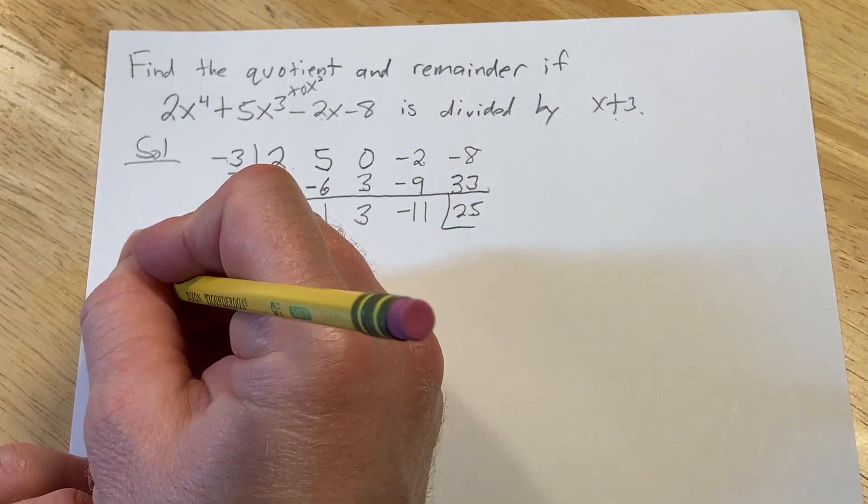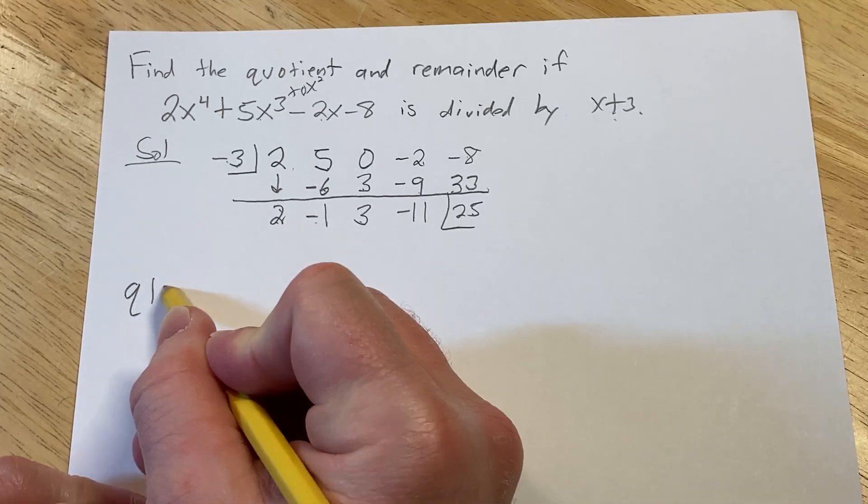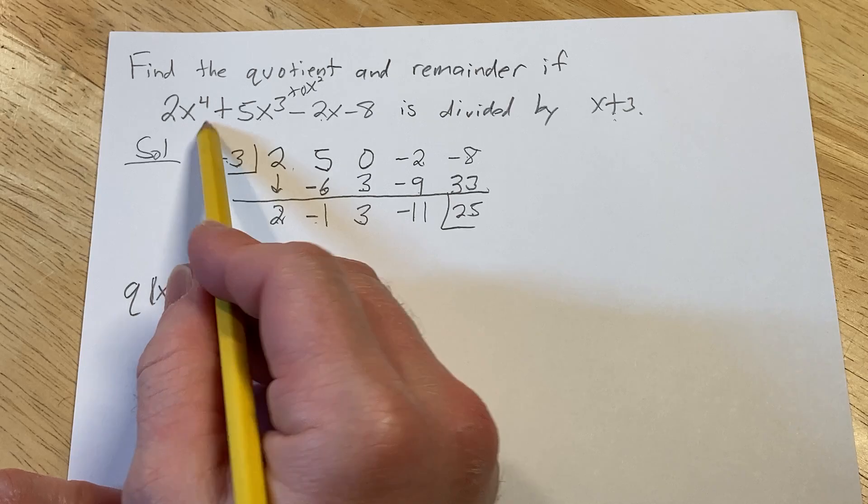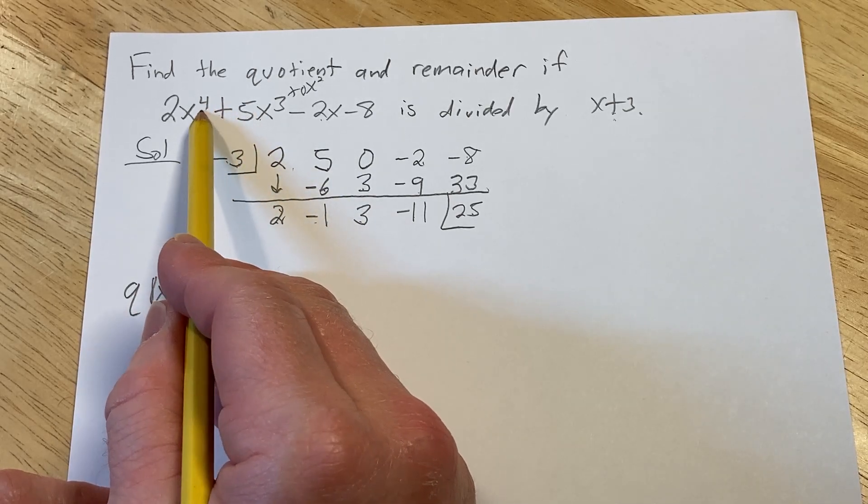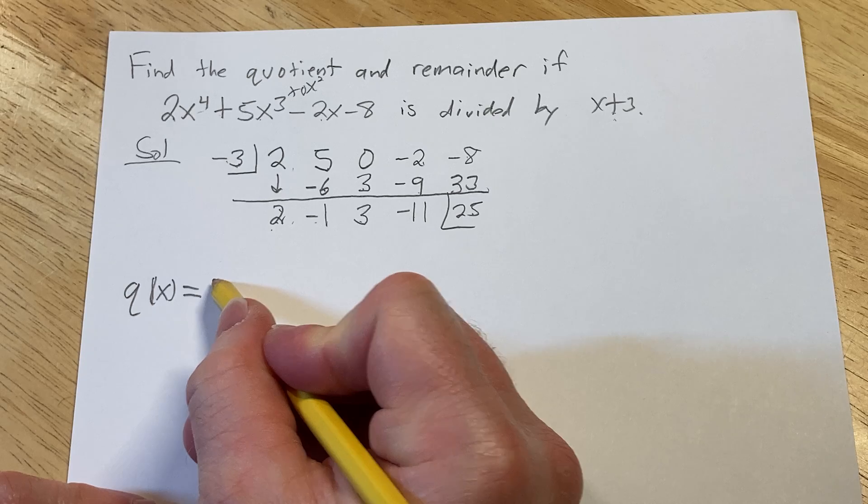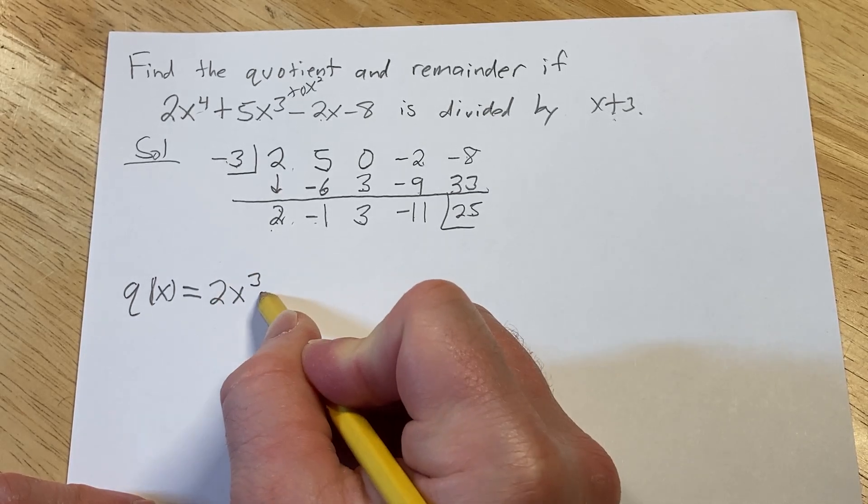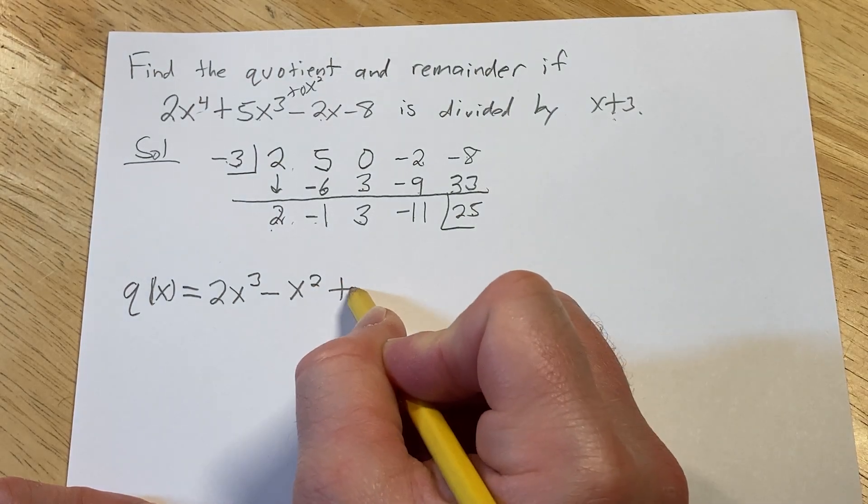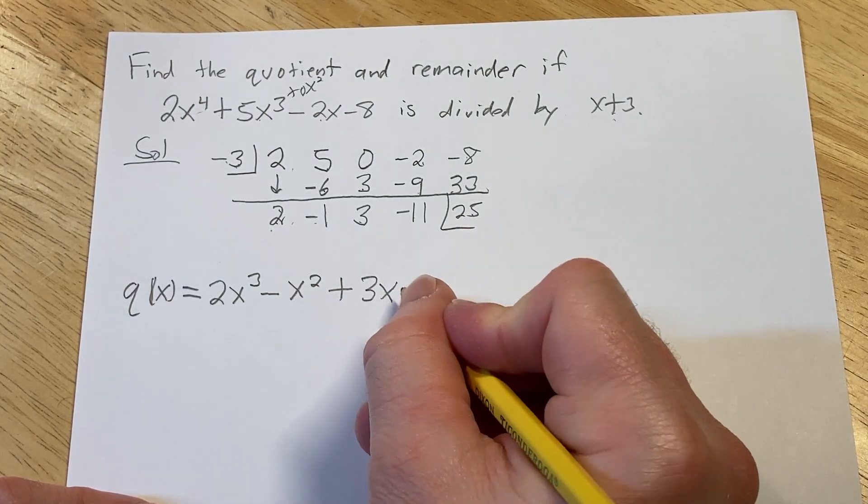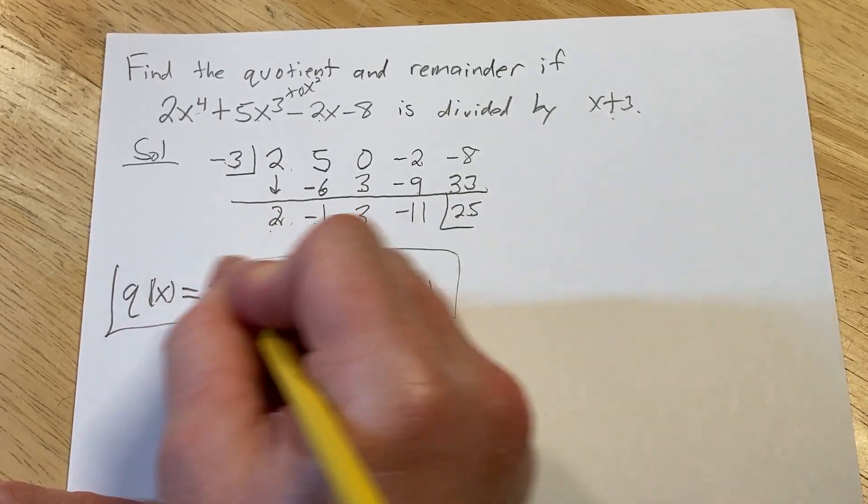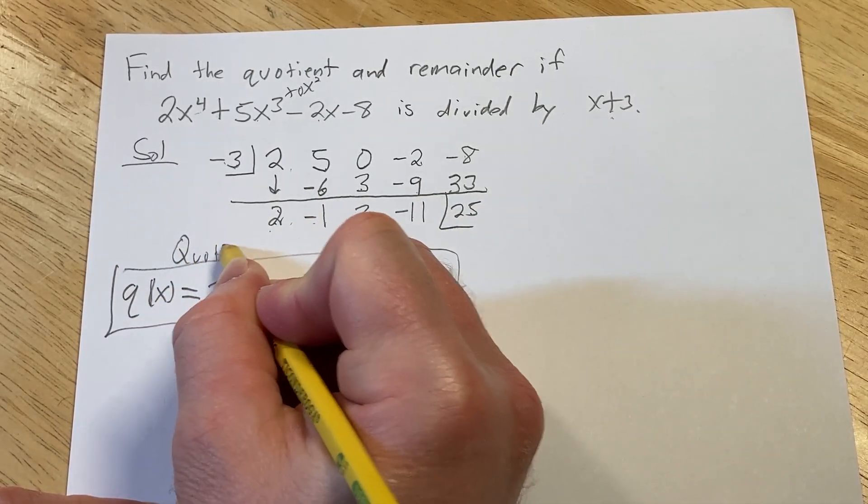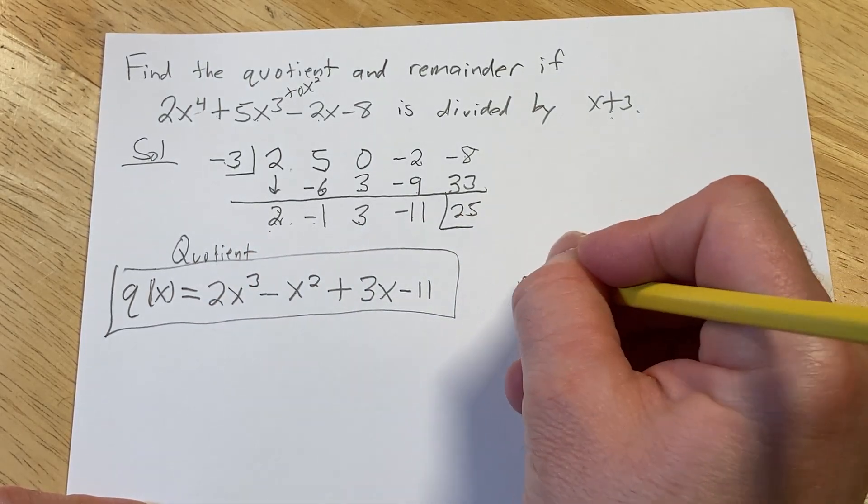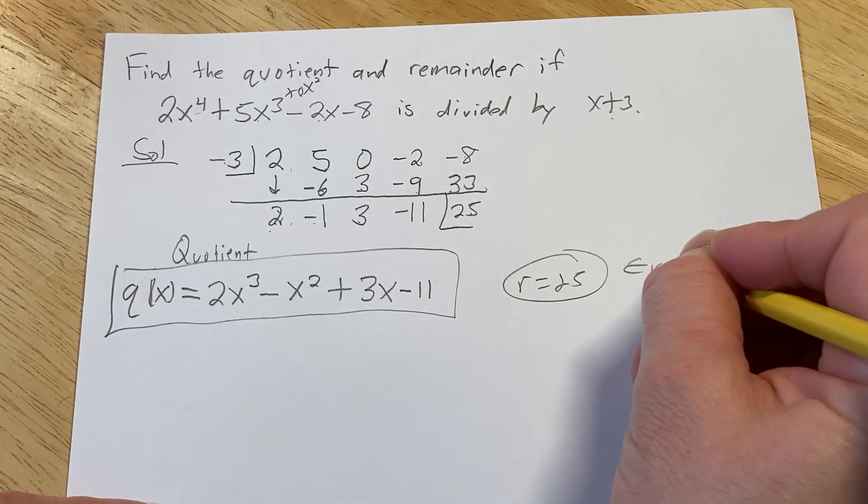Okay, so the quotient, I'm going to call it q of x. The quotient in this case is going to be, well, basically you want to start at 1 less. So this is a 4. So we're going to start at 3. So it's 2 times x cubed. And then you just go down in powers minus 1 times x squared, which is just x squared, plus 3x, minus 11. This is going to be the quotient. And then the remainder is r equals 25. So this is the remainder.